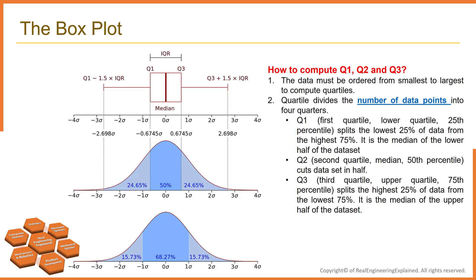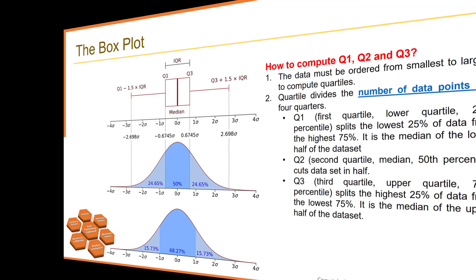As you can see, 50 percent of data are between Q1 and Q3. Just remember that this is the number of data between Q1 and Q3, or interquartile range.